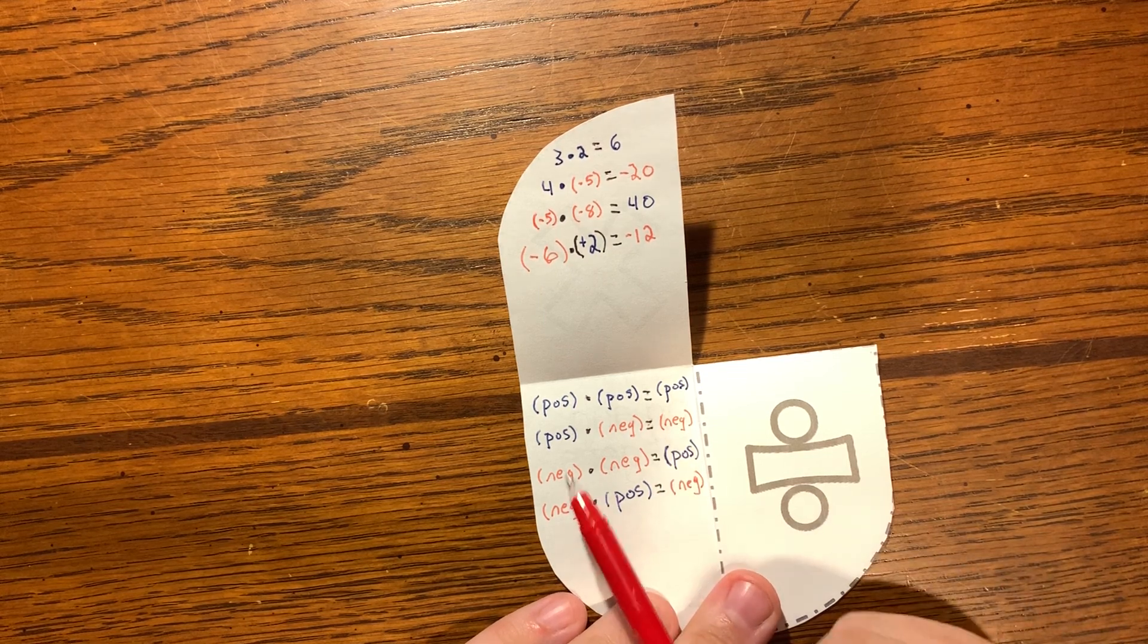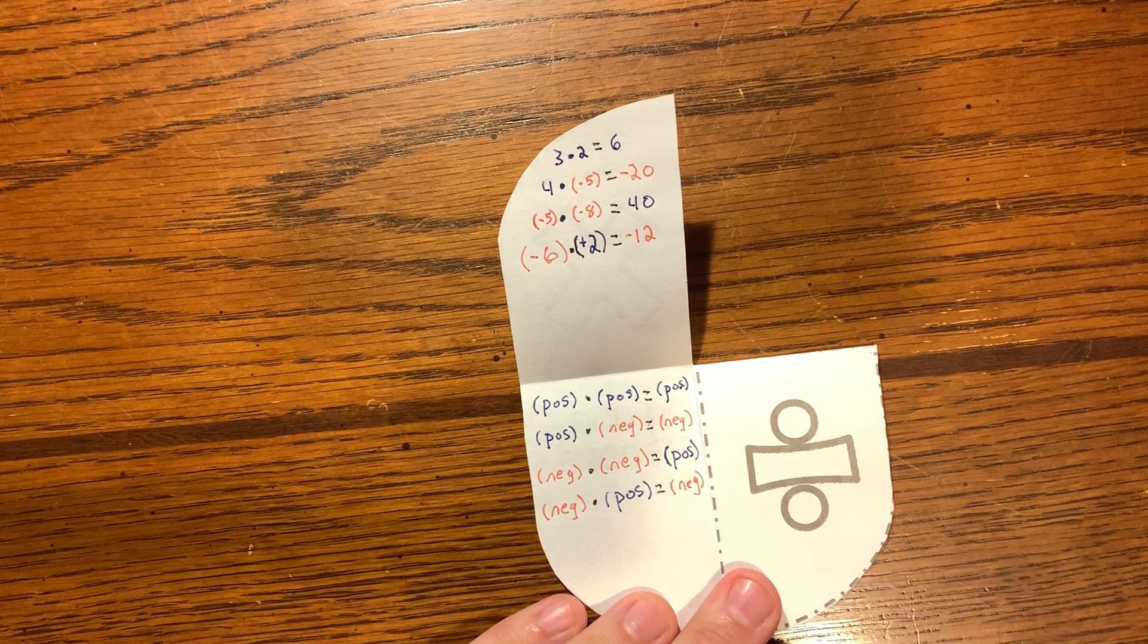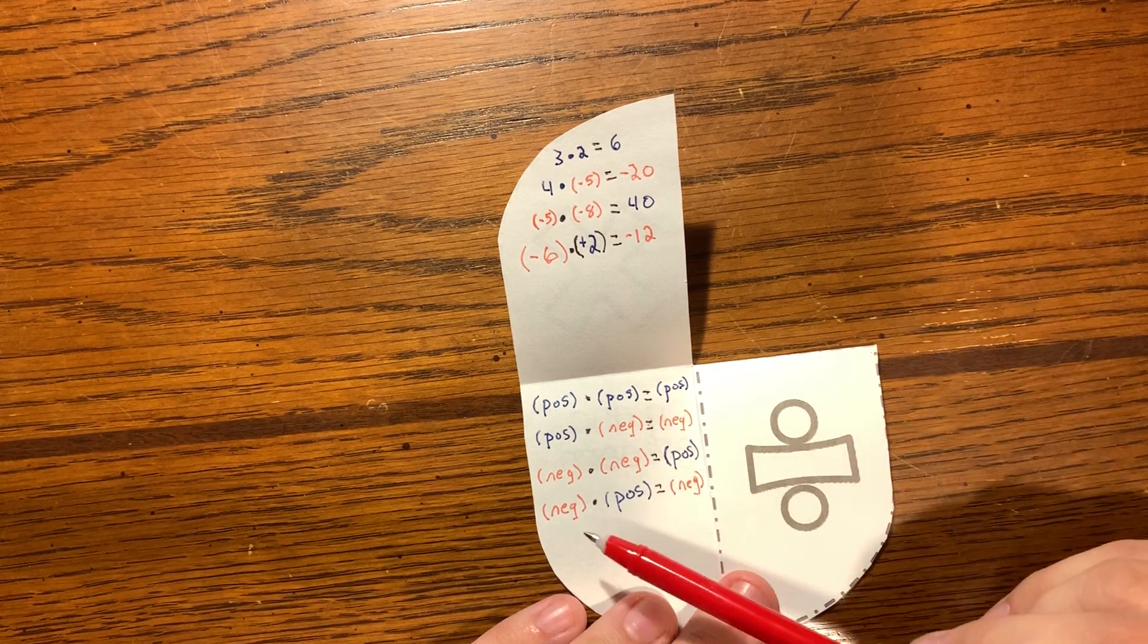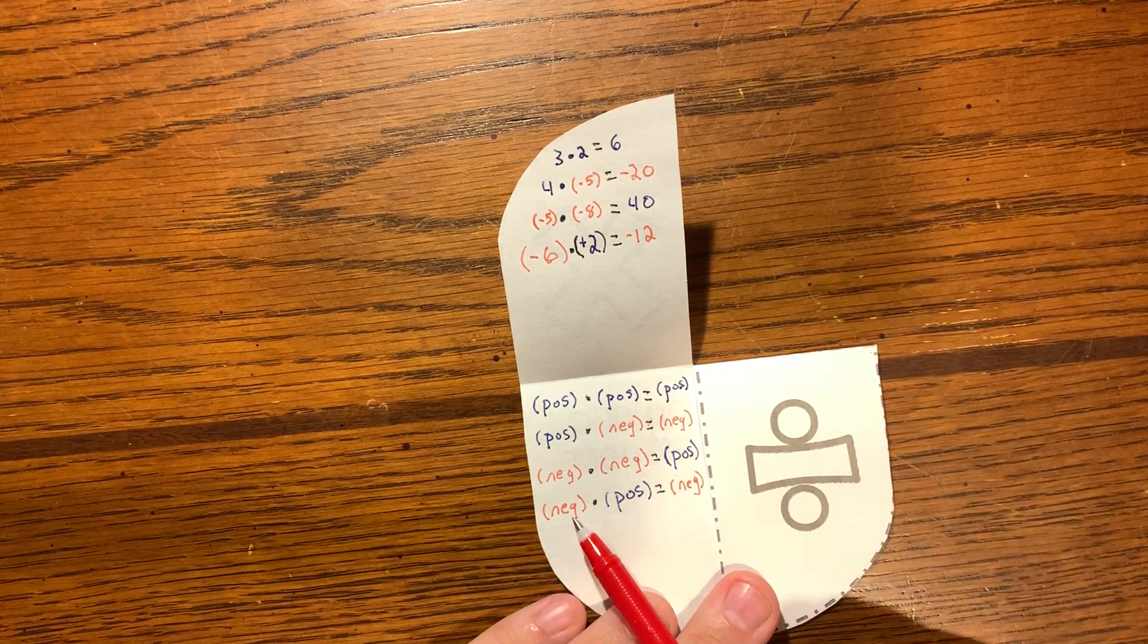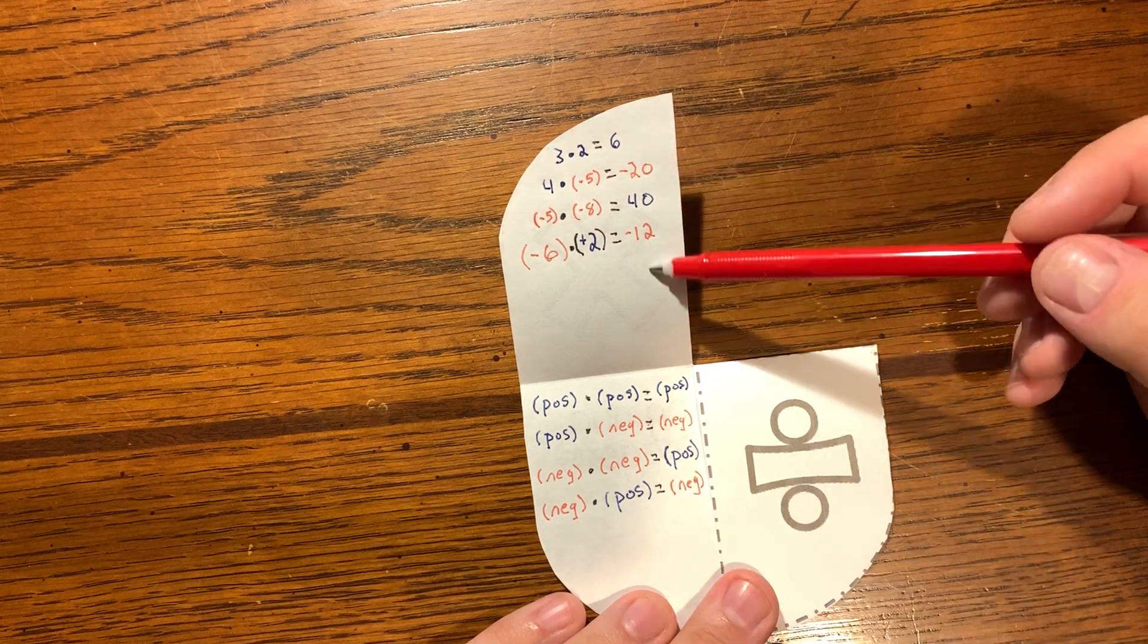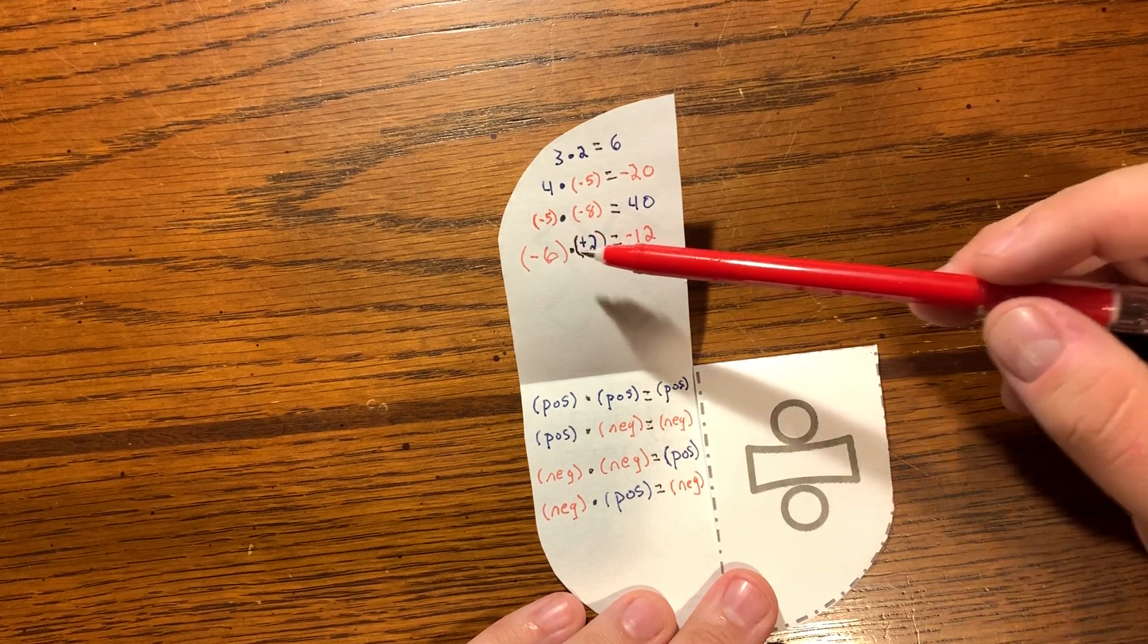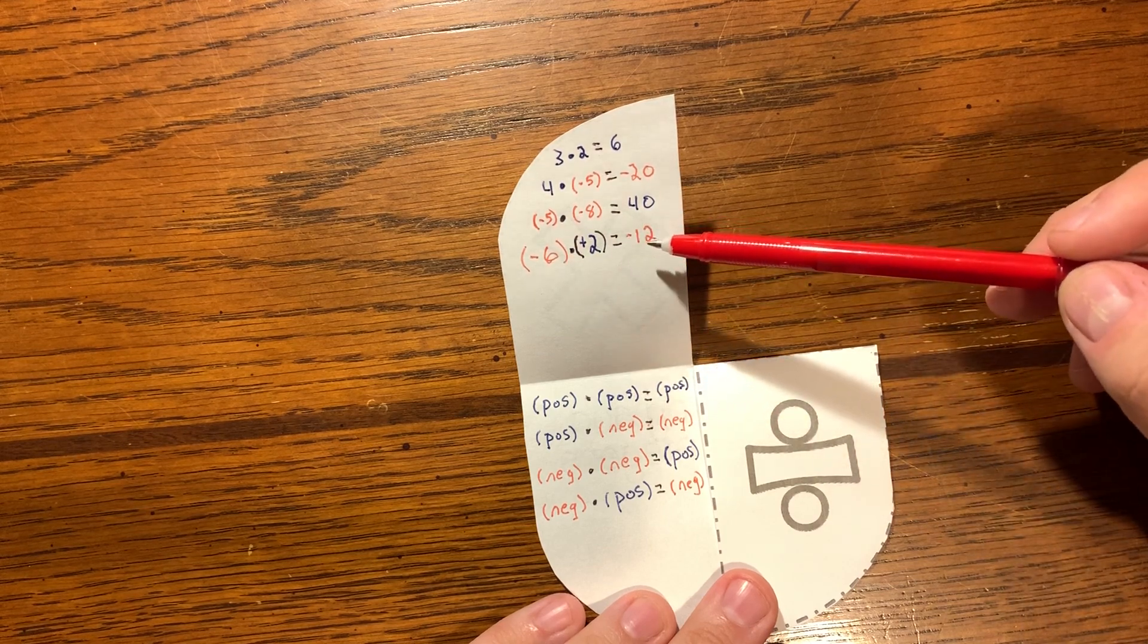In this way, if something bad happens to somebody that's bad, it's a good thing. So it's kind of one way you can think about how two negatives can make a positive. And if we keep going here, a negative times a positive is a negative, because if something bad happens to a good person, it's a bad thing. And the examples that match up are negative 5 times negative 8 - those two negatives make positive 40. Negative 6 times positive 2, you line those up, a negative and a positive equals negative 12.